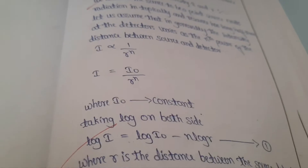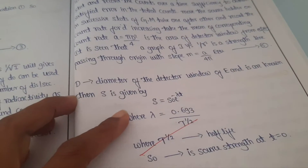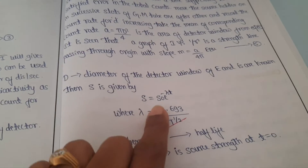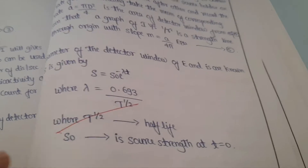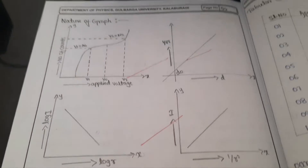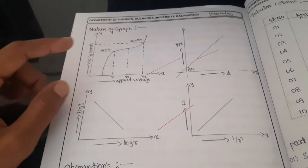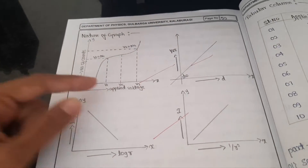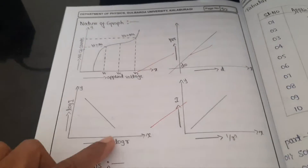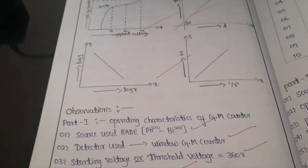Here are some formulas required to do this experiment. The source strength formula is used to calculate source strength. There are four nature of graphs for this experiment: first is for operating voltage, and then using intensity and distance we have three more graphs.